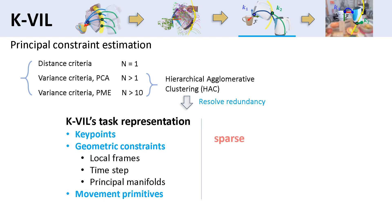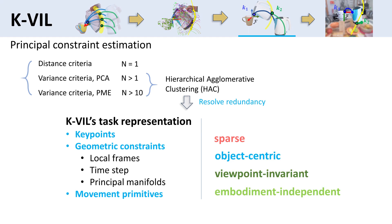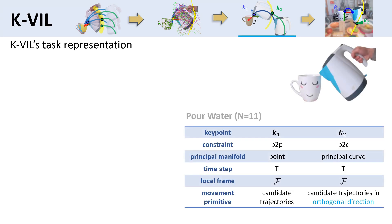Since the sparse set of keypoints, constraints, and movement primitives are defined in an object-centric manner, they are viewpoint-invariant and embodiment-independent. These facilitate skill transfer from the demonstrator to the robot.